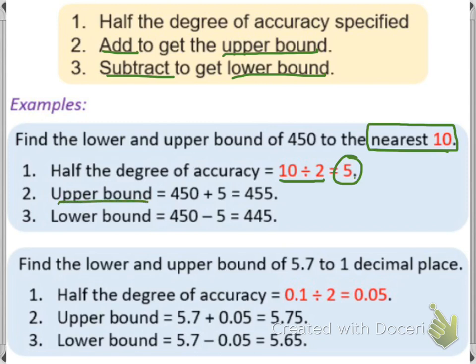For the upper bound, since I mentioned above it's addition, we will add 450 plus 5 and we'll get 455. And for lower bound, we'll do 450 minus 5 and we'll get 445. So the upper bound in this question is 455 and lower bound is 445.